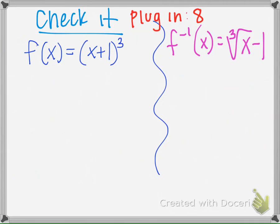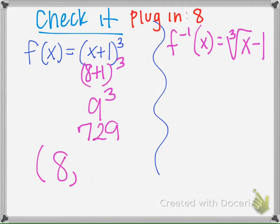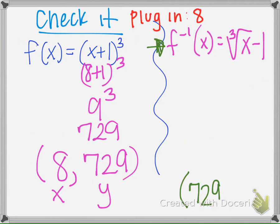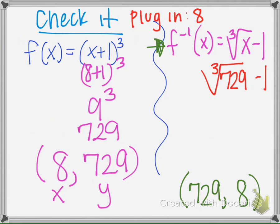Let's check this. Taking the original function and plugging in x = 8, we get (8 + 1)³ = 9³ = 729. So when x = 8, y = 729. If we did our work correctly, plugging 729 into the inverse should give 8. The cube root of 729 is 9, and 9 − 1 = 8. Confirmed.